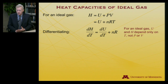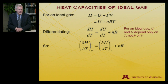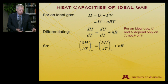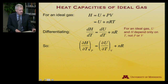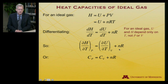For an ideal gas, U and hence H depend only on temperature, not on pressure or volume. So I can write this more generally: the exact differential is also equal to the partial of H with respect to T at constant pressure, equals ∂U/∂T at constant volume, plus NR. That is, C_P = C_V + NR.